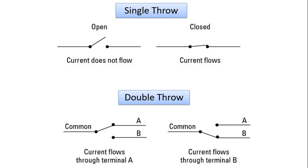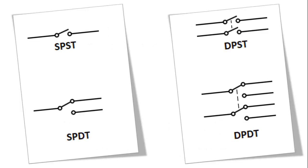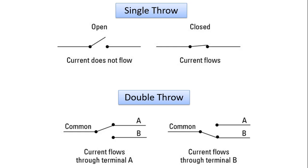Many mechanical style switches are categorized by their number of poles, throws and style of operation. Poles and throws are simply denoted by letters — SPST, SPDT, DPDT, for example. To better understand the working logic of switches, we need to know the concepts of poles and throws.